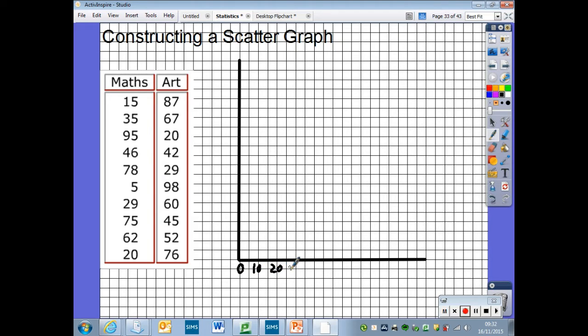Starting from 0, 10, 20, 30, 40, 50, 60, 70, 80, 90, 100. And we do the same with the y-axis going from 0 to 100 in steps of 10 using every other line for our numbers so that we have even scales on both of our axes. We need to remember to label our axes. We label our x-axis maths and we label our y-axis with art. And then we need to give our scatter graph a title. And we're going to call it test scores year 8.